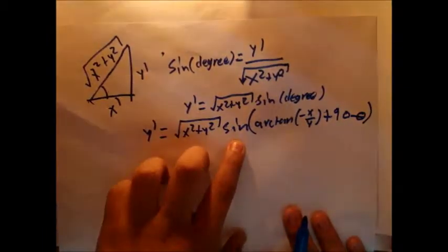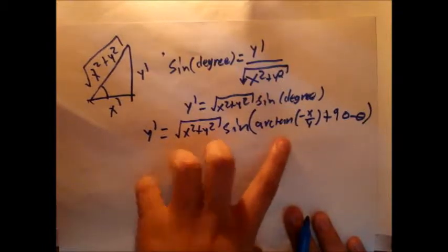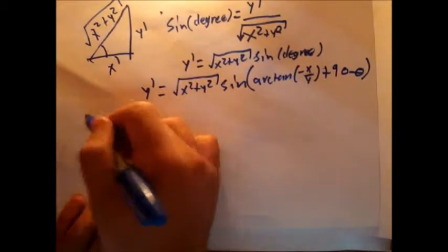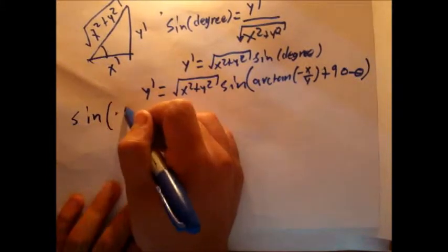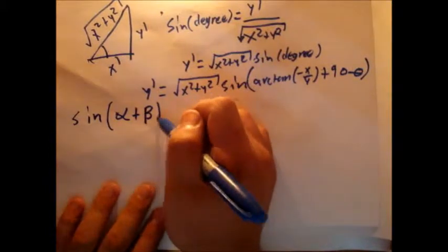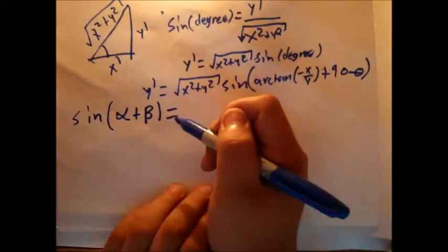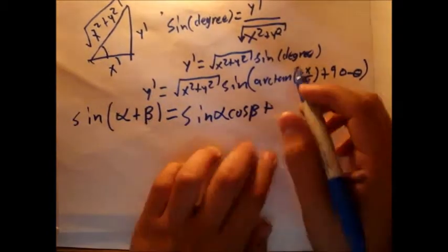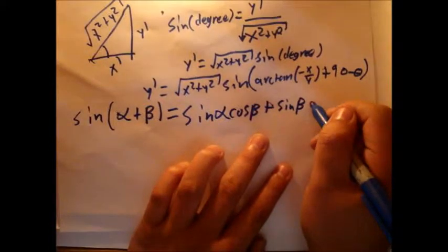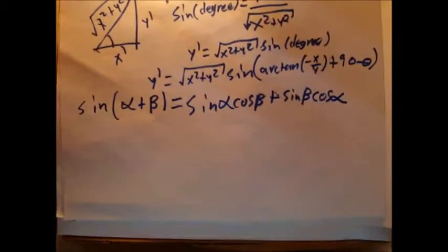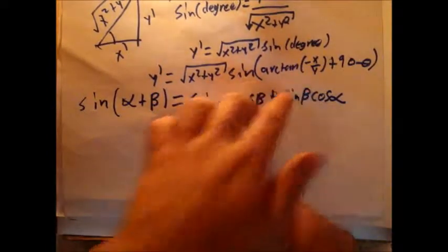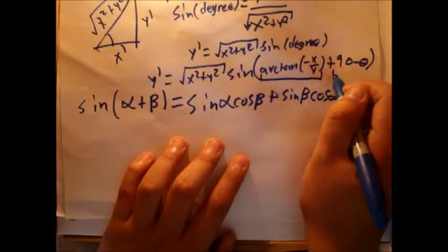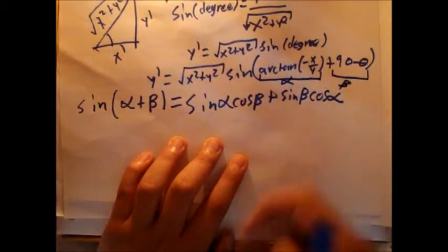Traditionally we don't solve trigonometric identities with such a complicated function. How would we solve this? If we remember the identity sine(alpha plus beta) equals sine(alpha)cosine(beta) plus sine(beta)cosine(alpha), we can use this. Think of arctan(negative x / y) as the first angle alpha and 90 minus theta as the second angle beta.